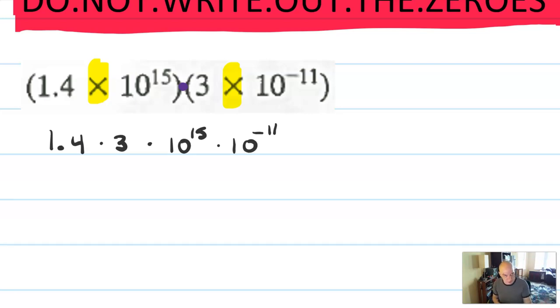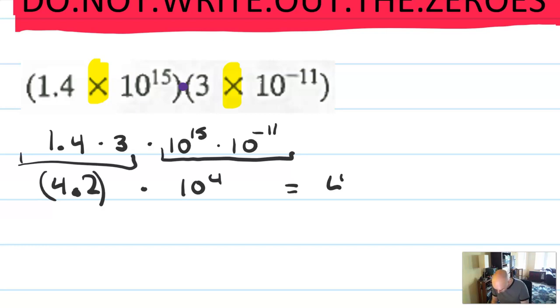That's a much more useful way to group these numbers up. Now, 1.4 times 3, you can think about it for a second. That's going to be 3 times 1 is 3, and 0.4 times 3 would be 1.2. So this is going to be 4.2. You can also, I guess, just do 14 times 3. And then 10, so that's these together. And then 10 to the 15th and 10 to the 11th, that's going to be 10 to the 4th. So 4.2 is already as a proper decimal.